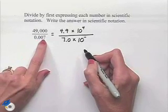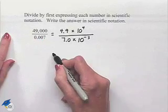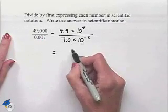We've moved this one, two, three places, so we have times 10 to the negative 3 power. Now we can separate this into two fractions.